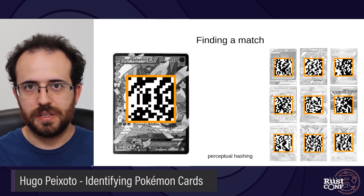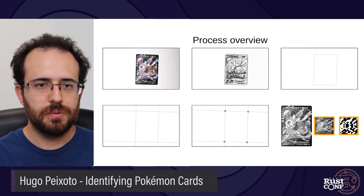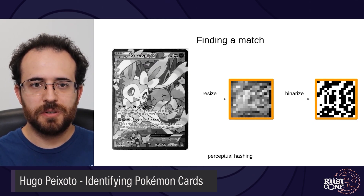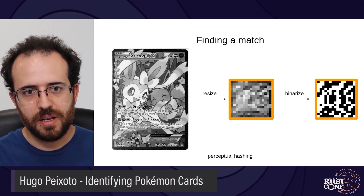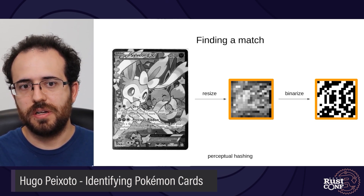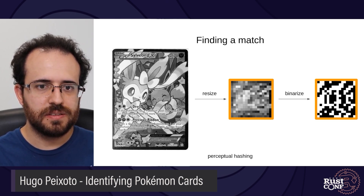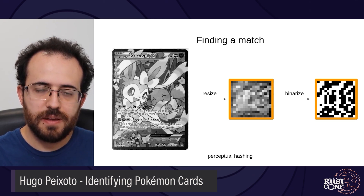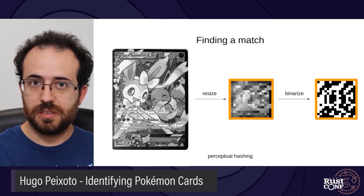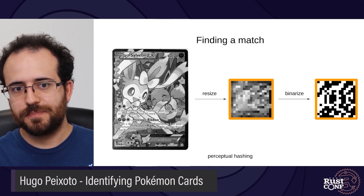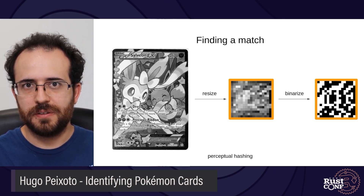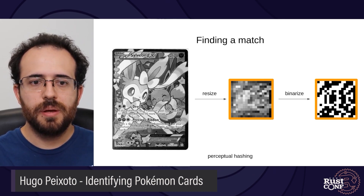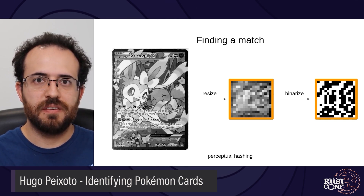Let's see how this hash is calculated. We take our image and resize it down to 16x16. Then we binarize it — converting each pixel into a 0 or a 1. Each pixel becomes a 1 if it is darker than the pixel to its left, and 0 otherwise. There are different types of perceptual hashes, both in the resizing part and the binarization step, but this is a simple algorithm that gave me good results.